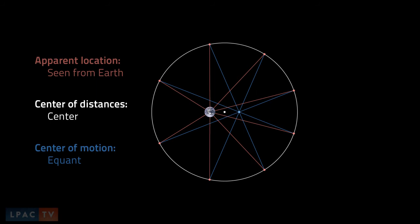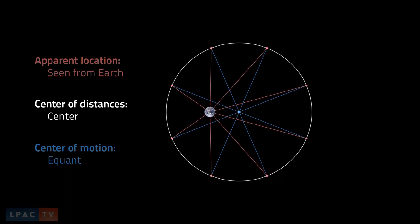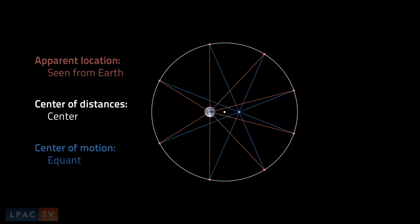The planet, or rather the center of the planet's epicycle, would move in the shape of a circle around the center of distances. But its speed would be determined by moving at a constant angular rate around the center of motion. This center of motion was called the equant.